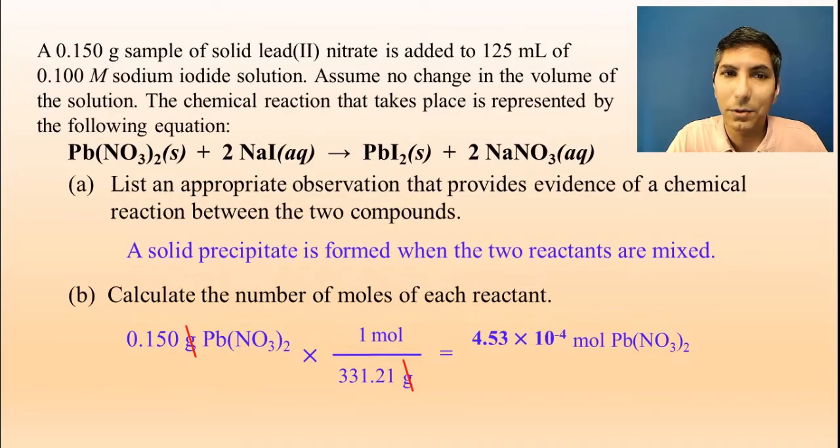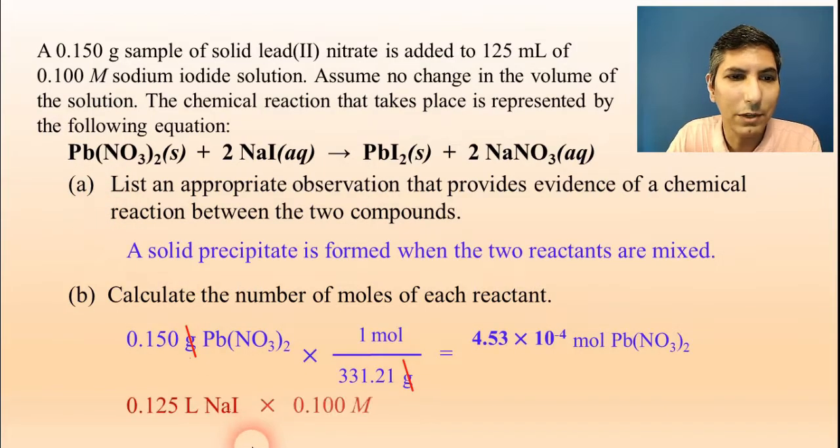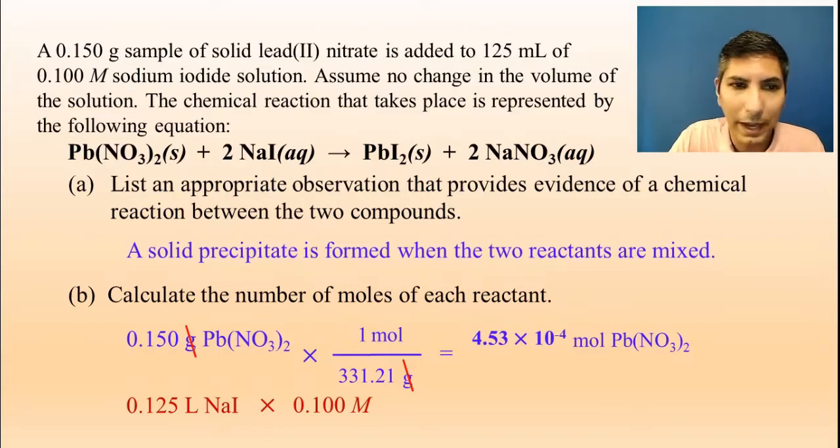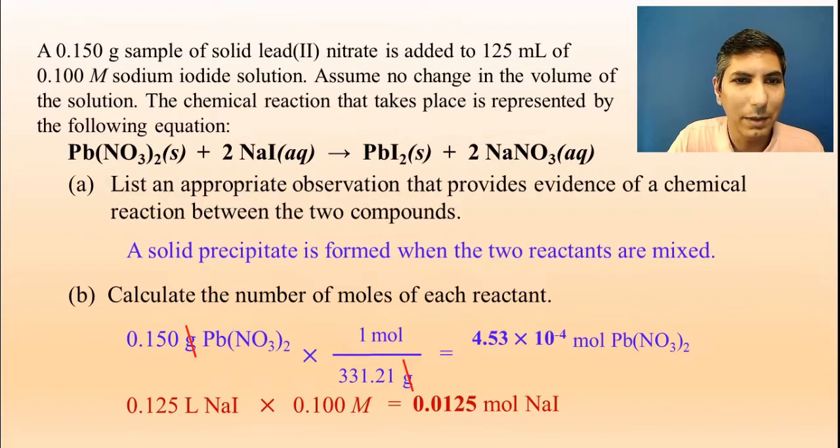Now there's another reactant we have to calculate this for, the sodium iodide. But this one is in a solution form. So we have 0.125 liters and 0.100 molar. So we just have to multiply those numbers by each other. And we should get the number of moles of sodium iodide. When you do that, that should be about 0.0125 moles of sodium iodide.